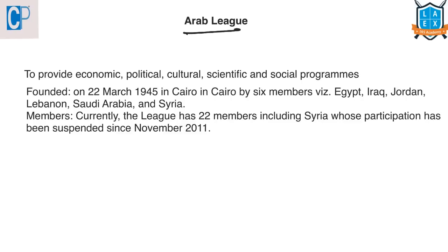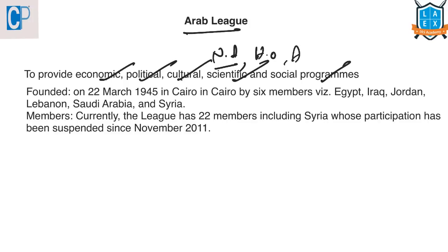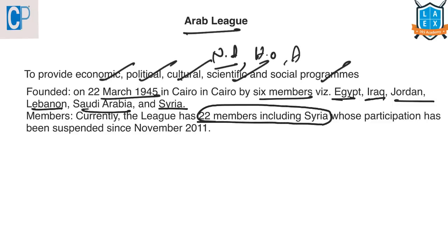The Arab League is a regional organization of Arab countries in and around North Africa, the Horn of Africa, and Arabia. The objective of this regional organization is to provide economic, political, cultural, scientific, and social programs designed to promote the interests of the Arab world. It was founded on 22nd March 1945 in Cairo by six members: Egypt, Iraq, Jordan, Lebanon, Saudi Arabia, and Syria. At present this league has 22 members including Syria, but Syria's participation has been suspended since 2011.